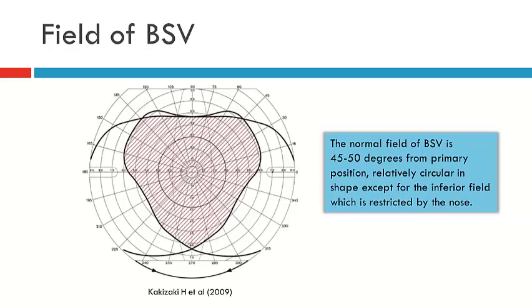What does the normal field of BSV look like? Here we can see the normal field of BSV — it's that which is shaded — and it's approximately 45 to 50 degrees from prime position. Be aware that as you come into down gaze, we have a narrowing of that field because of the nose.